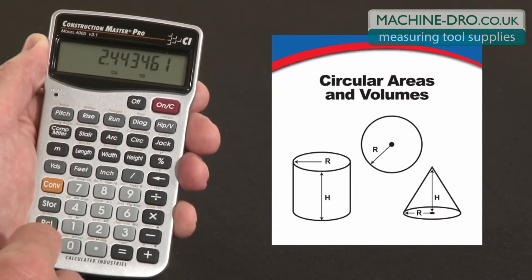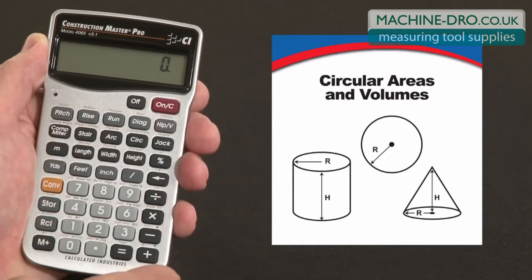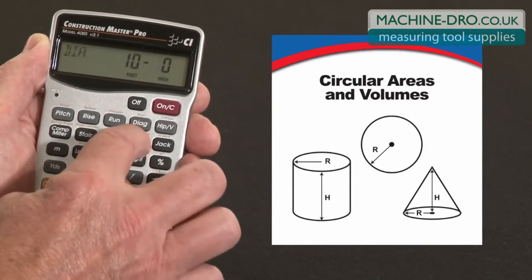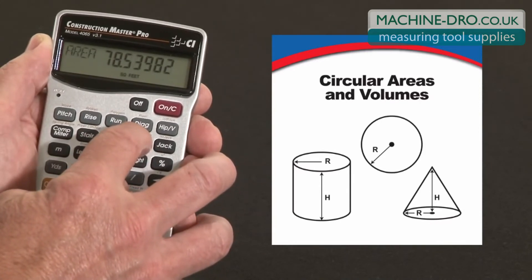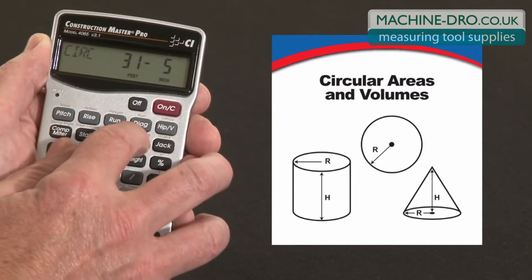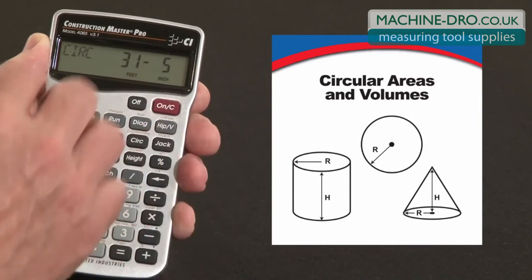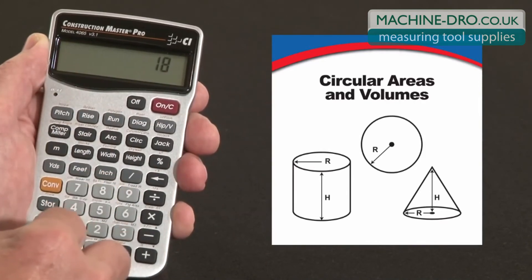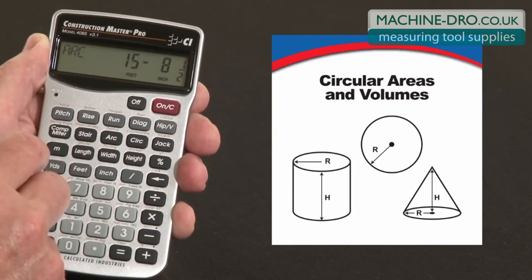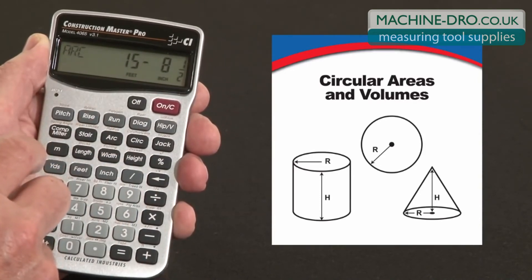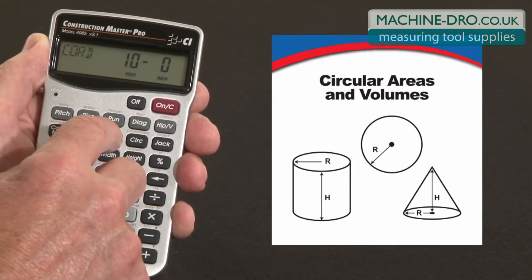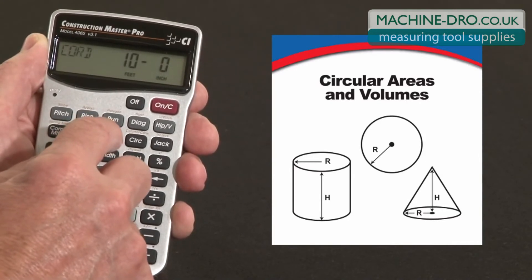Say you've got a patio with a semi-circular edge on it with a 10-foot diameter circle and I want to figure out the arc length. 10 feet is my diameter. Press it again — there's my surface area, the surface area of the whole circle. The circumference of the whole circle is 31.5 feet, but I only want half of that — 180 degrees. So 180 is my arc input. Press it again and the arc length is 15 feet 8.5 inches around it. Press it again for the chord length across it — well, that makes sense, it's 180 degrees of a 10-foot diameter circle.